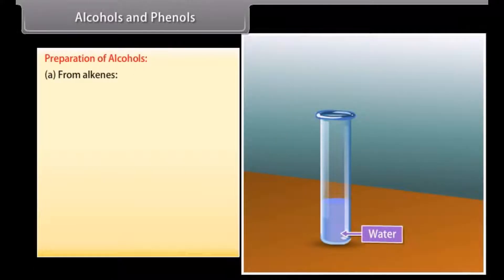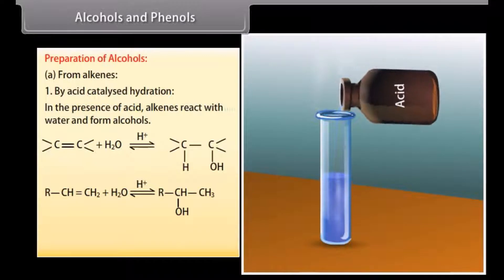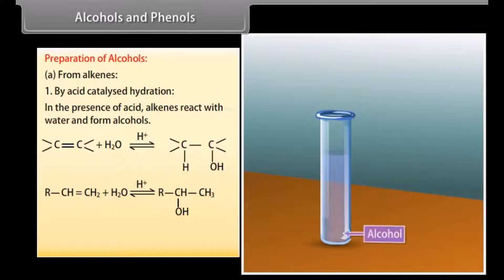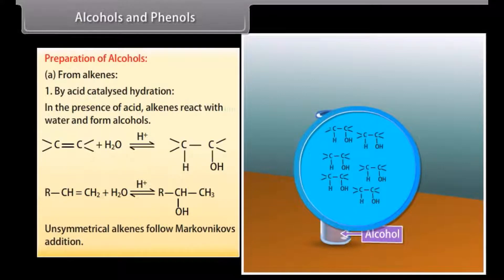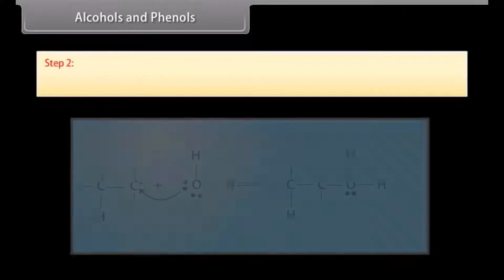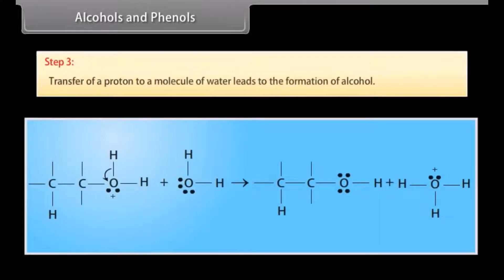Preparation of alcohols from alkenes by acid-catalyzed hydration. In the presence of acid, alkenes react with water to form alcohols. Unsymmetrical alkenes follow Markovnikov's addition. The mechanism involves three steps: Step 1 — the alkene accepts a proton by electrophilic attack of a hydronium ion to form a stable carbocation; Step 2 — the carbocation reacts with a water molecule to form a protonated alcohol; Step 3 — transfer of a proton to water gives the final alcohol.